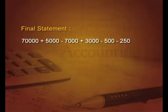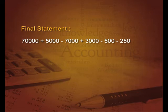The final picture: 70,000 plus 5,000 minus 7,000 plus 3,000 minus 500 minus 250 makes 70,250. This is the balance as per pass book, which is the final answer.